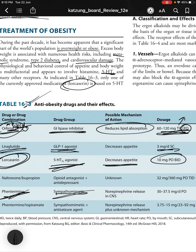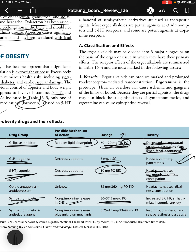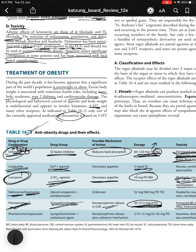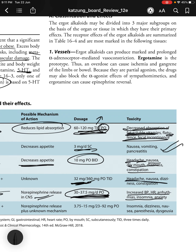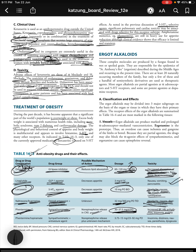Additional anti-obesity drugs: Phentermine is a sympathomimetic causing norepinephrine release in the CNS, dosed 30–37.5 mg/day; toxicity includes increased BP, heart rate, arrhythmias, insomnia, and anxiety. Naltrexone/bupropion combines an opioid antagonist with an antidepressant, mechanism of action for weight loss is unknown, toxicity includes headache, nausea, dizziness, and constipation. Phentermine/topiramate combines a sympathomimetic with an antiseizure agent, dosed 3.75–15 mg/day; toxicity includes insomnia and dizziness.